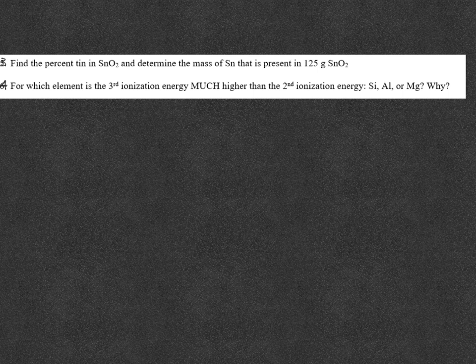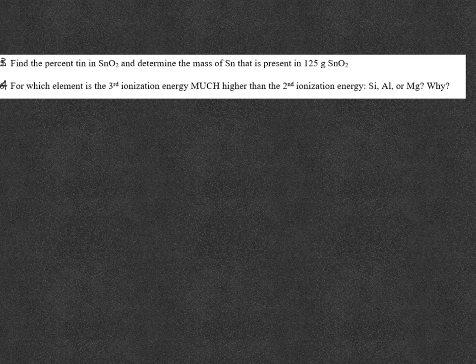So for the SnO2, first thing we're going to do is get the molar mass. So it's going to be the mass of tin, which is 118.71, plus 2 times the mass of oxygen. And I get 150.71. Those values are from the periodic table.